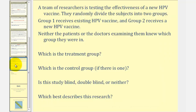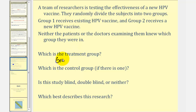Let's take a look at an example. A team of researchers is testing the effectiveness of a new HPV vaccine. They randomly divide the subjects into two groups. Group one receives the existing HPV vaccine and group two receives the new HPV vaccine. Neither the patients nor the doctors examining them knew which group they were in. Since this study is designed to determine how effective the new vaccine would be, the treatment group would be the group receiving the new vaccine, which is group two. The control group would be the group that receives the existing vaccine, which is group one. Because group one is receiving an acceptable vaccine, we could also call this the comparison group.